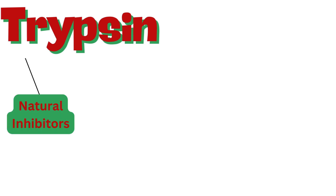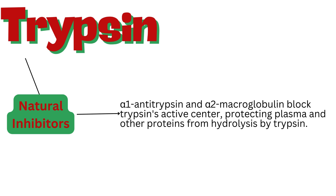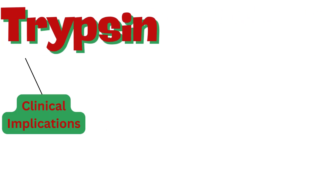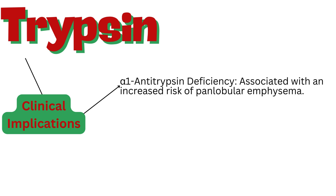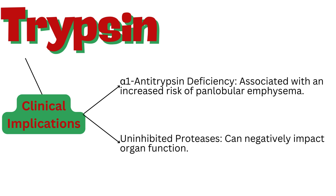To prevent unwanted protein breakdown, the body has natural inhibitors. Alpha-1-antitrypsin and alpha-2-macroglobulin block trypsin's active center, protecting plasma and other proteins from hydrolysis by trypsin. Absence or malfunction of these inhibitors can have serious consequences — alpha-1-antitrypsin deficiency is associated with an increased risk of panlobular emphysema, and uninhibited proteases can negatively impact organ function.